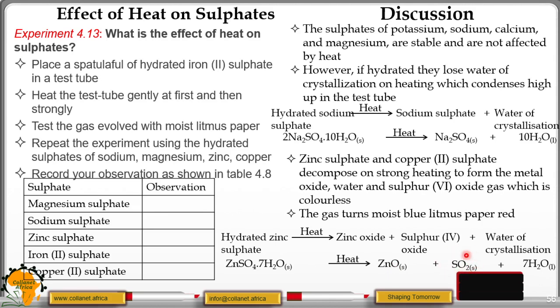This gas is acidic. So it's going to change blue litmus paper, which is moist, into red. Then we have a colorless liquid, which turns white anhydrous copper(II) sulfate to blue.